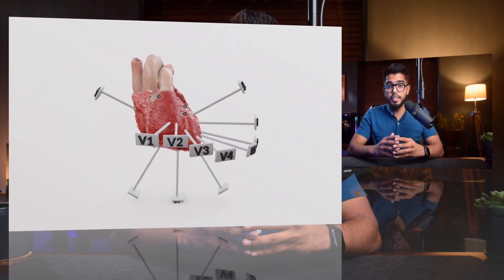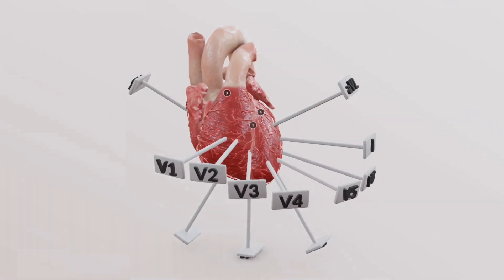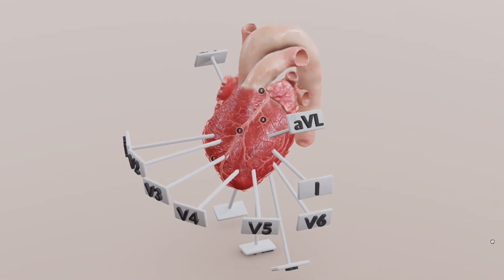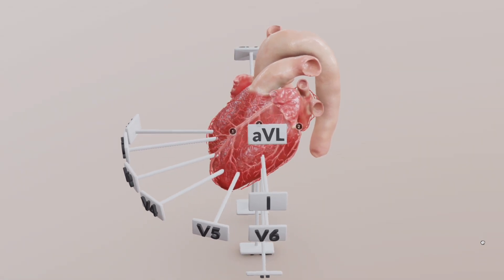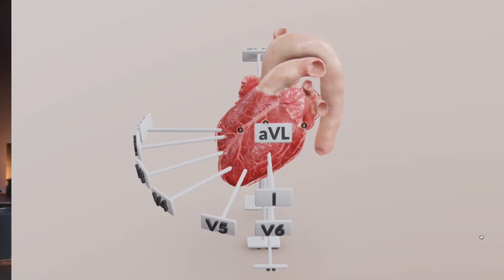In the previous video, we talked about what's in ECG and how to perform an ECG on a patient. In this video, we learn about understanding ECG leads and how they represent different walls of the heart. There are two main categories of leads: limb leads and precordial leads.